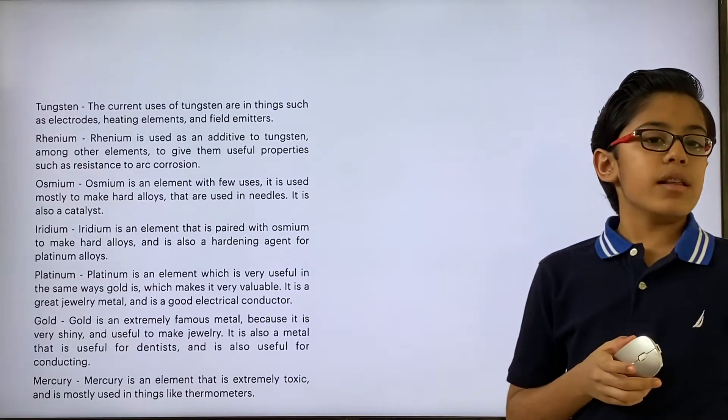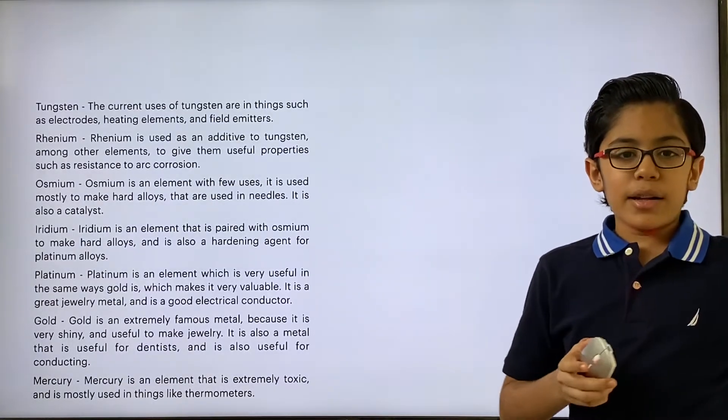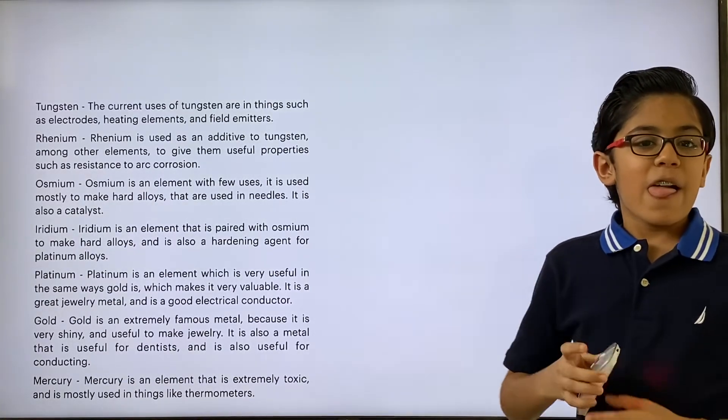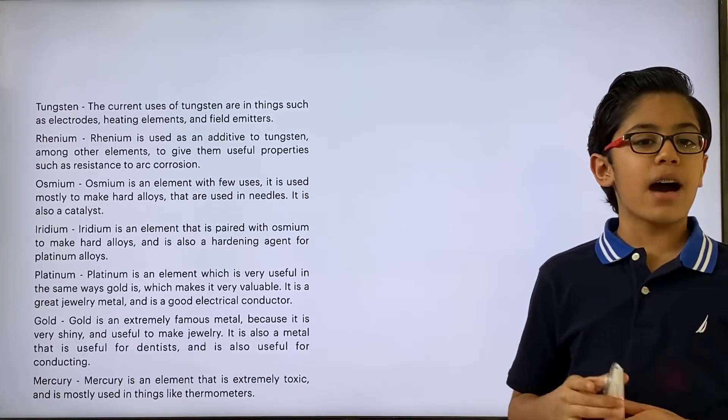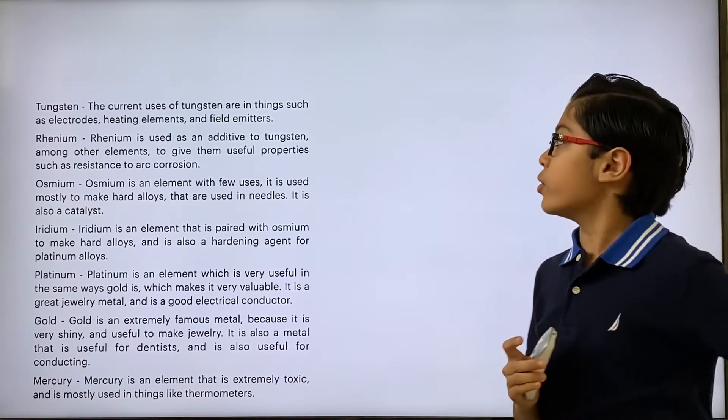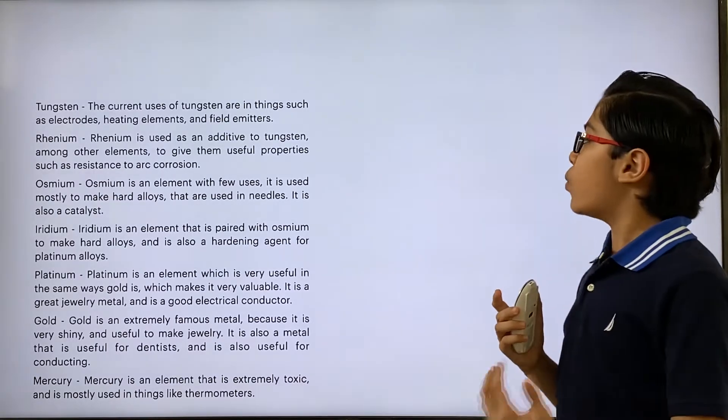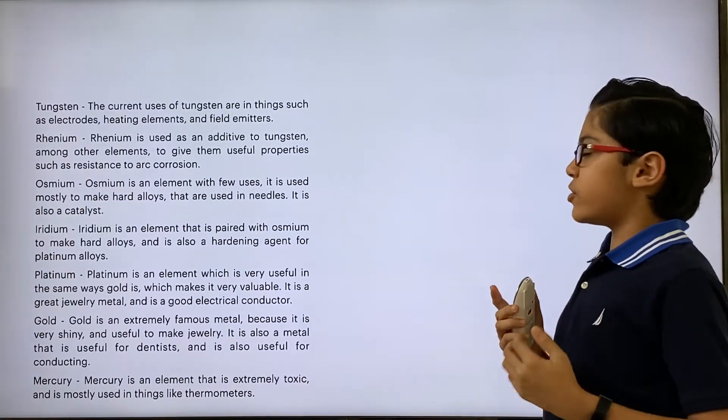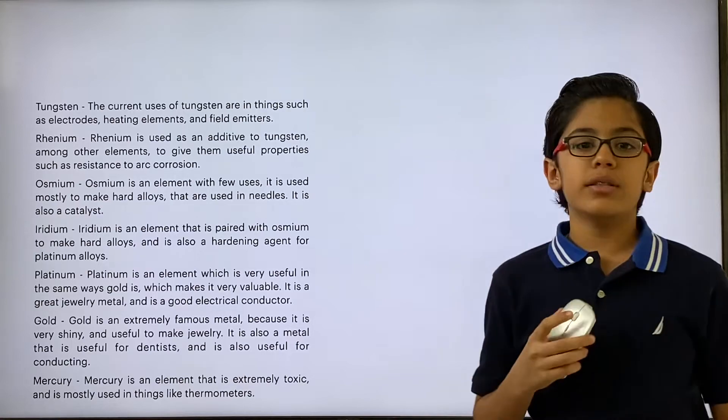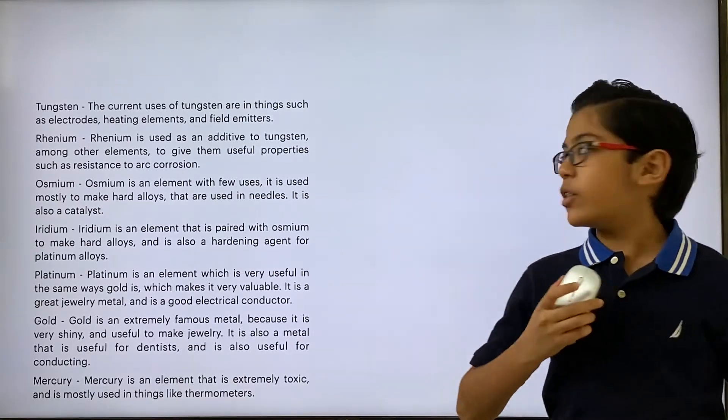Tungsten. This is an element that's a big powerful element because it has the highest melting point of all metals. It's very powerful, and that's why it can be used in things such as electrodes and heating elements, because it's able to withstand so much heat.